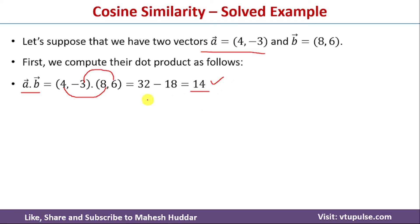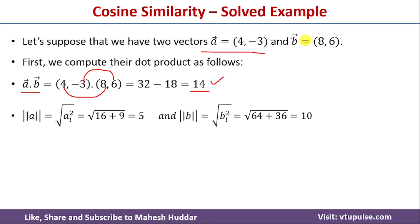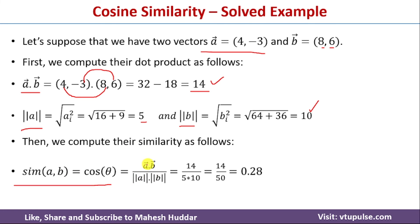Next, we calculate the denominator — the magnitudes of the vectors. The magnitude of A equals the square root of 4² plus (-3)², which equals 5. The magnitude of B equals the square root of 8² plus 6², which equals 10. The cosine similarity between A and B equals the dot product divided by the product of the magnitudes: 14 divided by (5 × 10), which equals 0.28. This means vectors A and B are 28% similar.